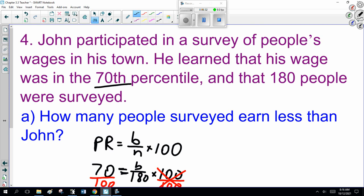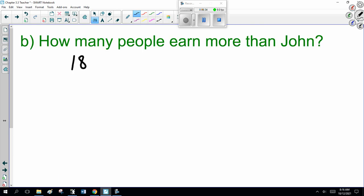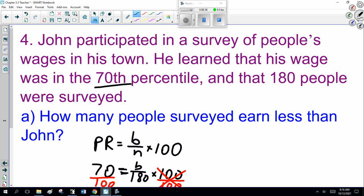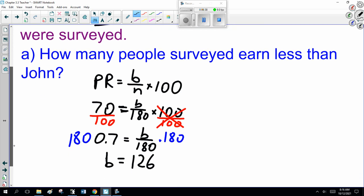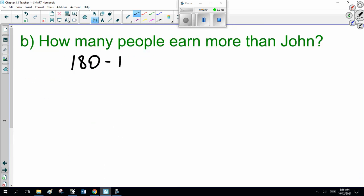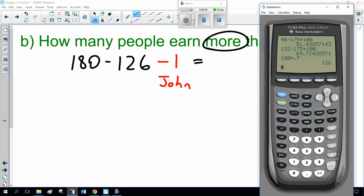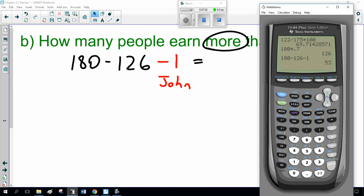Well, let me see. There were 180 people. Now, let's look at this carefully. There were 126 people earned less. And don't forget to subtract John himself, because we're looking to earn more. 180 minus 126 minus 1 is 53 people.